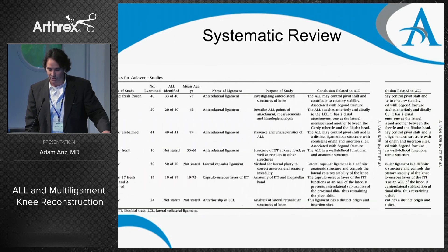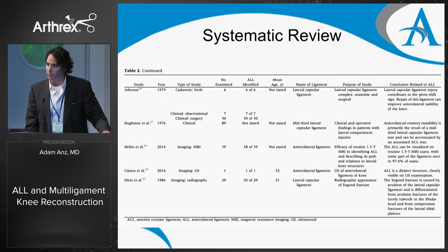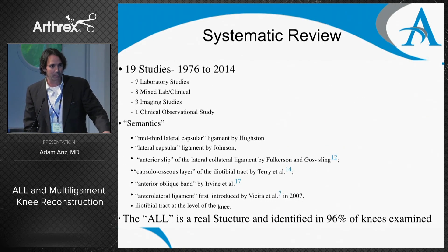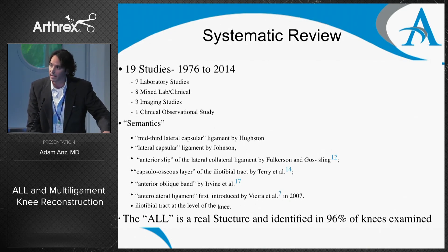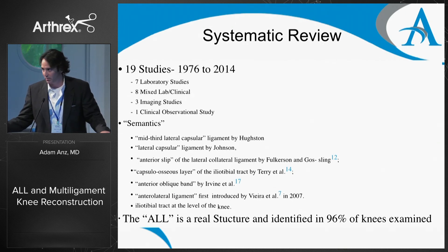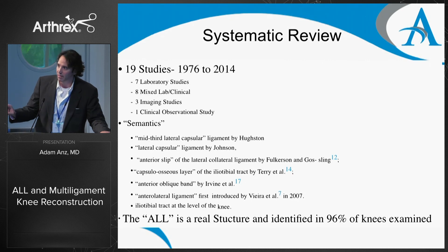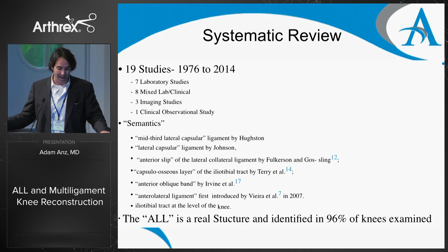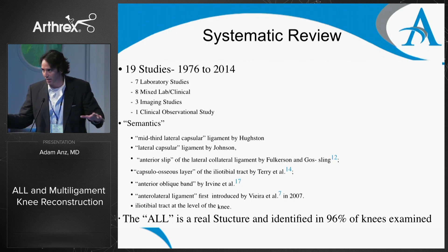There are a lot of studies that have been studying this ever since 1976 — three pages worth. There are 19 studies from 1976 to 2014 that looked at the lateral complex: seven laboratory studies, eight mixed lab and clinical studies, three imaging studies, and one clinical observational study. It seems we're all beating around the bush with semantics — whether it be the mid-third capsular ligament, the lateral capsule, the anterior slip, or the capsuloosseous layer — all these names refer to the same complex of structures.